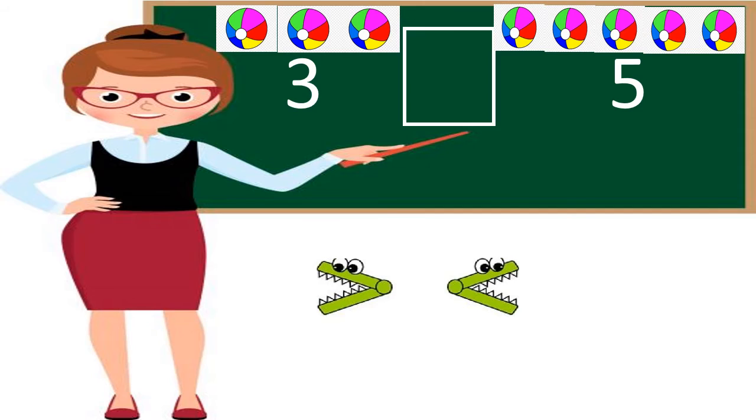Children, on one side, there are three balls and on the other side, there are five balls. Now, tell me which number is bigger, three or five? Well done, children. Number five is bigger than number three. So, we will put this sign.